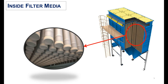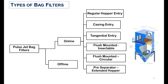Here is the inside of a filter media. Bag filters are mainly categorized into two types based on their cleaning mechanism: online bag filters and offline bag filters. Online bag filters are further divided into regular hopper entry, casing entry, tangential entry, flush mounted insertable, flush mounted circular, and pre-separator extended hopper types.